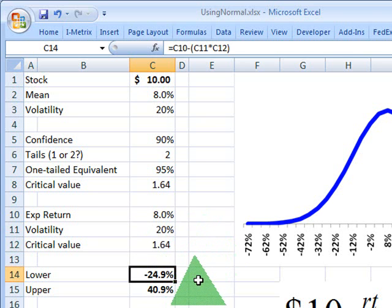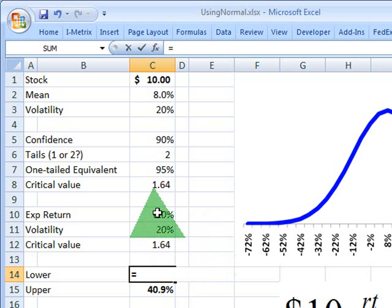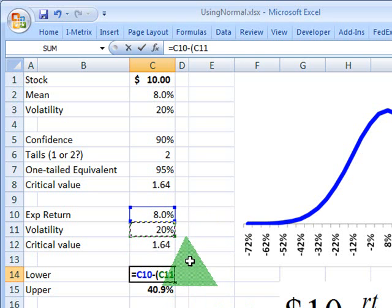And so now I'm going to calculate the lower value. And here I'll just re-input this formula to show you how simple this is. I say equals my expected return of 8% minus the volatility. That's 20%. So if I just stopped there, I would just be moving one standard deviation, but I need to multiply it by my critical value.